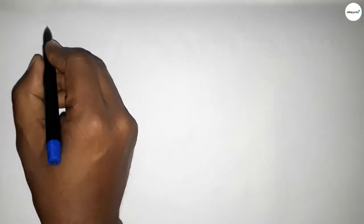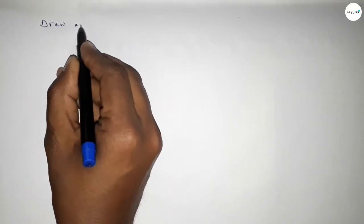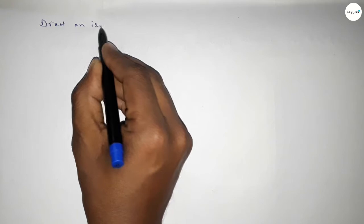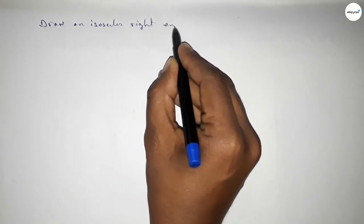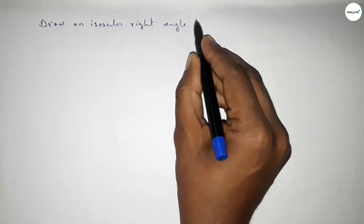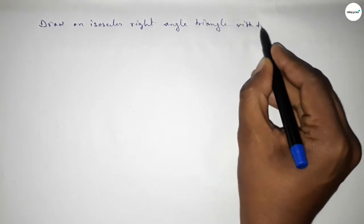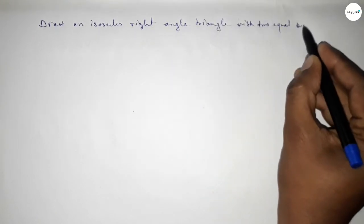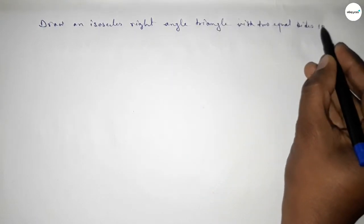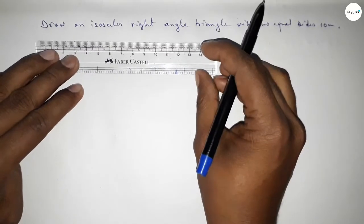Hi everyone, welcome to SSR Classes. Today in this video we have to draw an isosceles right angle triangle with two equal sides 10 centimeter. So let's start the video.